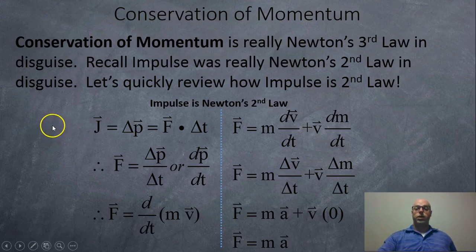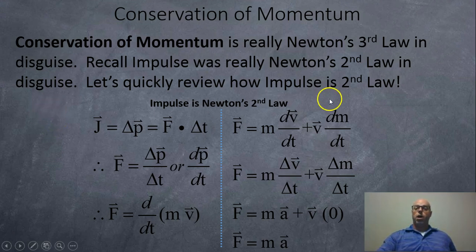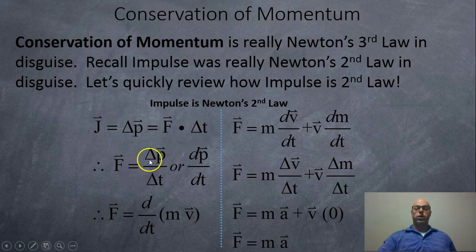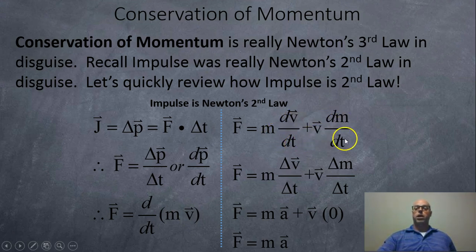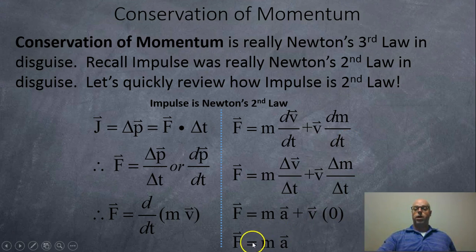Conservation of momentum is really Newton's third law in disguise. Recall that impulse was Newton's second law in disguise. Impulse equals the change in momentum, which equals force times the time interval. Rearranging: F = ΔP/Δt, or in calculus, F = d(P)/dt = d(MV)/dt. Applying the chain rule: F = M·(dV/dt) + V·(dM/dt). Since dV/dt is acceleration and dM/dt is usually zero, we get F = MA — Newton's second law.